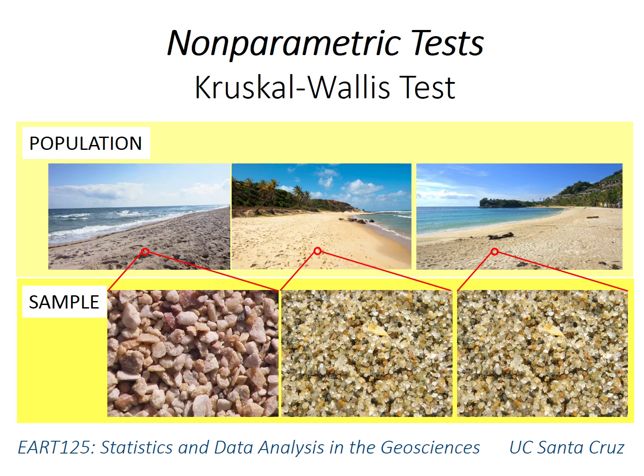This video introduces the Kruskal-Wallis test, which is the non-parametric equivalent of ANOVA. It tests for differences in central tendency among more than two non-normally distributed samples.